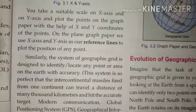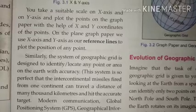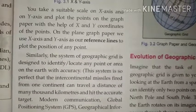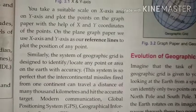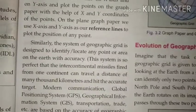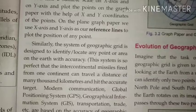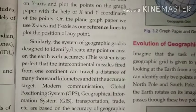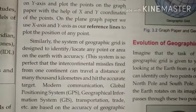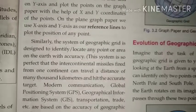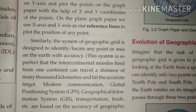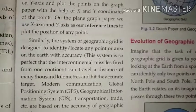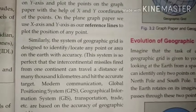On the plane graph paper we use x-axis and y-axis as reference lines to plot the position of any point. Similarly, the system of geographic grid is designed to identify and locate any point or area on the earth with accuracy. Just as we use coordinates in mathematics to find an exact point, we use latitudes and longitudes on the globe — that crisscross forms the geographic grid.